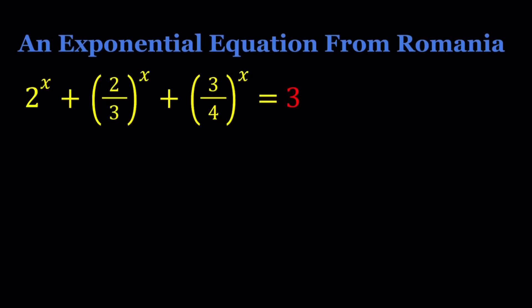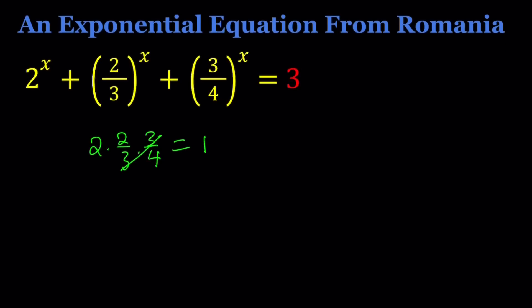And while solving for these x values I'm going to talk about an important inequality which is called AM-GM inequality. So first of all notice that the bases are somewhat related. If you multiply 2, 2 thirds and 3 fourths you get 1 because everything cancels out. So we're going to do substitution here which is a favorite method for me which is very powerful.